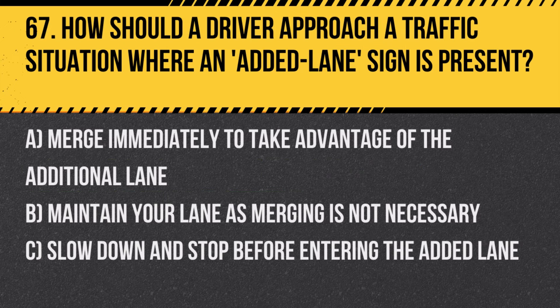Question 67: How should a driver approach a traffic situation where an added lane sign is present? A. Merge immediately to take advantage of the additional lane. B. Maintain your lane as merging is not necessary. C. Slow down and stop before entering the added lane. Answer: B. Maintain your lane as merging is not necessary. The added lane sign indicates that an additional lane begins and no merging is required.